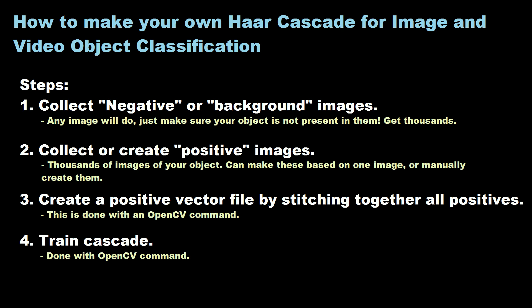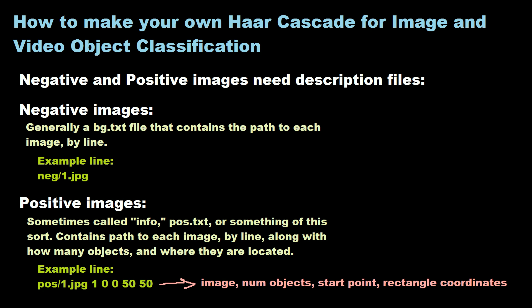Once you've collected those images, you create a positive vector file, which basically stitches together all of your positive images. Then with that you train your cascade with the positives versus the negatives. There are a bunch of parameters for both the training and the vector file that we'll talk about, but these are the main steps: get images, get thousands of negatives and positives, train the vector, train the cascade, and then use it like we did in the previous tutorial.